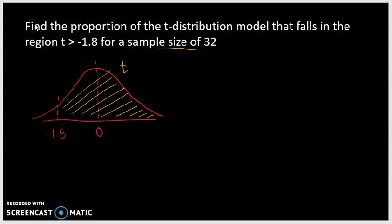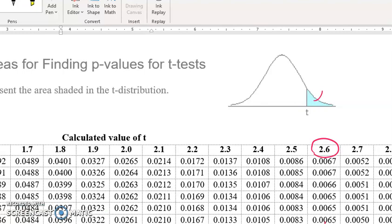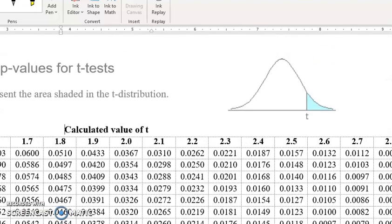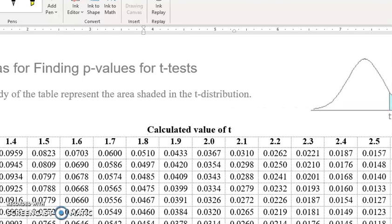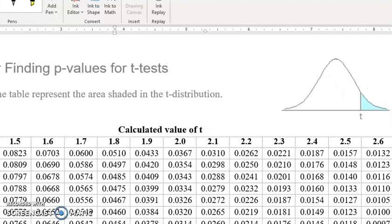What t-curve are we dealing with? The sample size is 32, and degrees of freedom equals n minus 1, which equals 32 minus 1, or 31 degrees of freedom. So this is a t-curve with 31 degrees of freedom. Remember: there's no negative 1.8 among the calculated values in the t-table. But this table uses the fact that the t-distribution is symmetric, so the proportion that falls greater than 1.8 is the same as the proportion that falls less than negative 1.8.